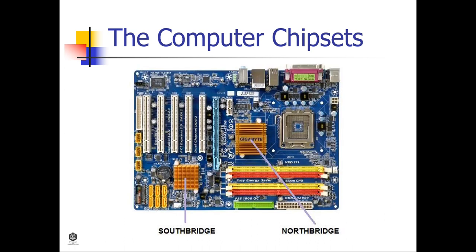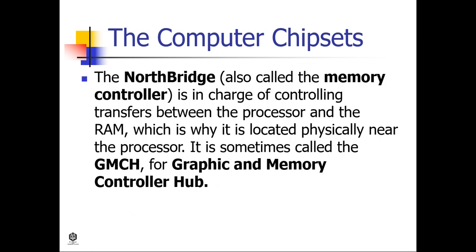A computer has two main chipsets: the North Bridge and the South Bridge. The North Bridge, also called the memory controller, is in charge of controlling transfers between the processor and the RAM, which is why it is located physically near the processor. It is sometimes called the GMCH — Graphic and Memory Controller Hub.